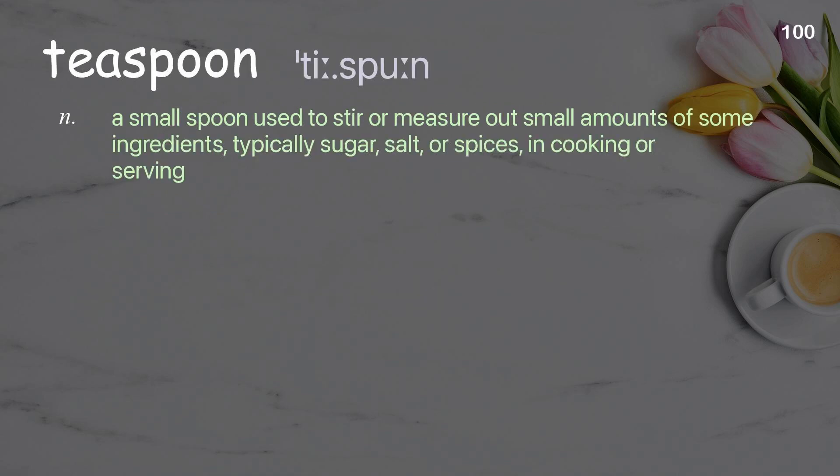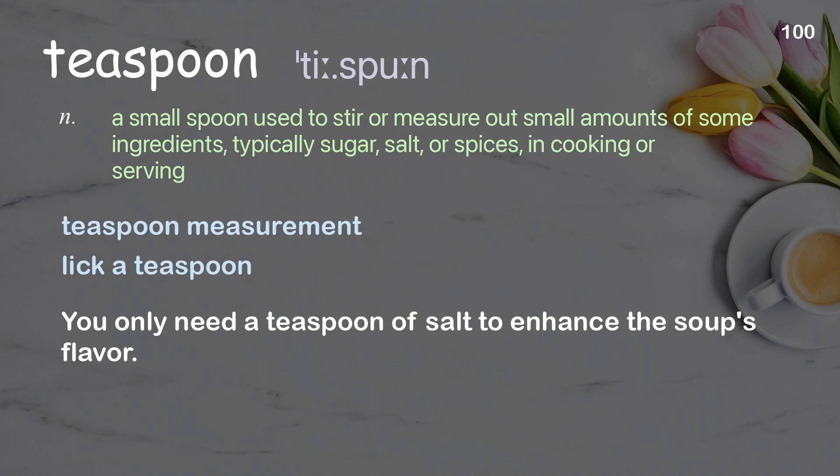Teaspoon: A small spoon used to stir or measure out small amounts of some ingredients, typically sugar, salt, or spices, in cooking or serving. Examples: Teaspoon measurement, Lick a teaspoon. You only need a teaspoon of salt to enhance the soup's flavor.